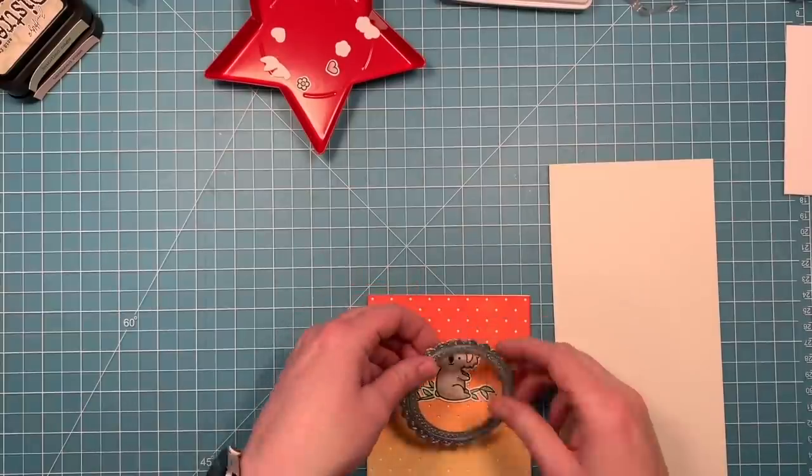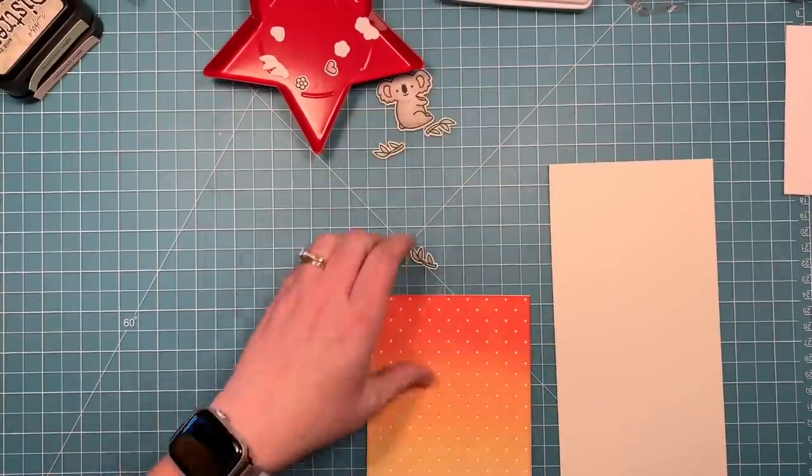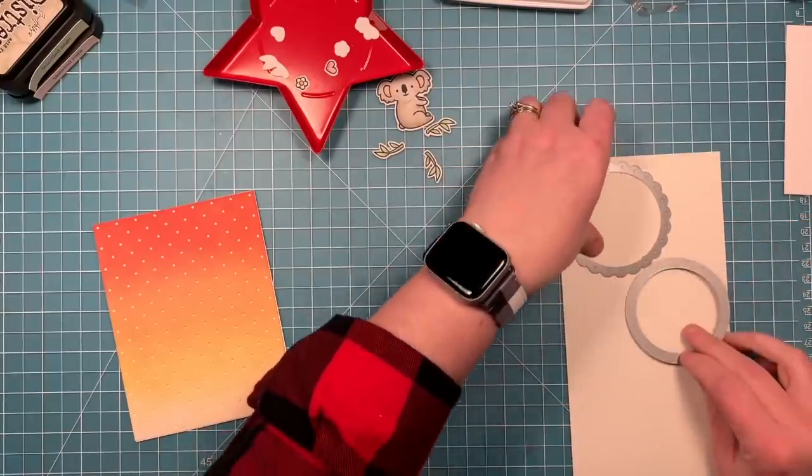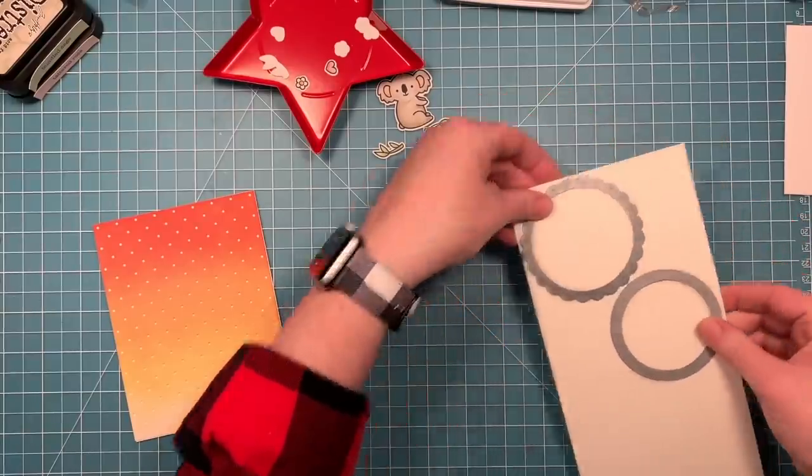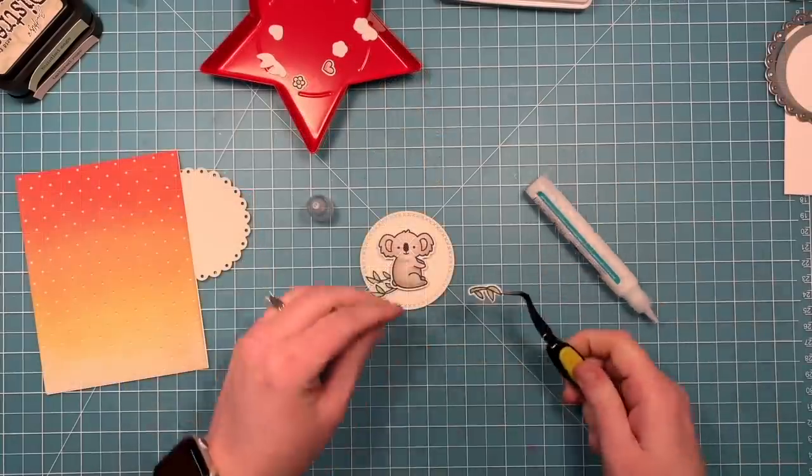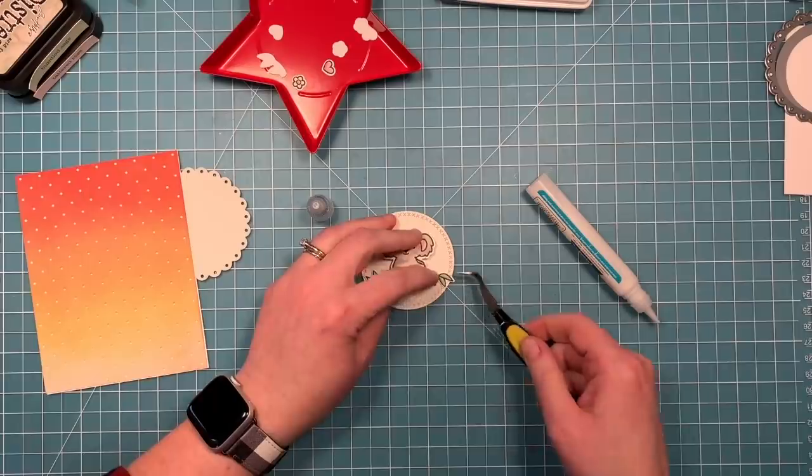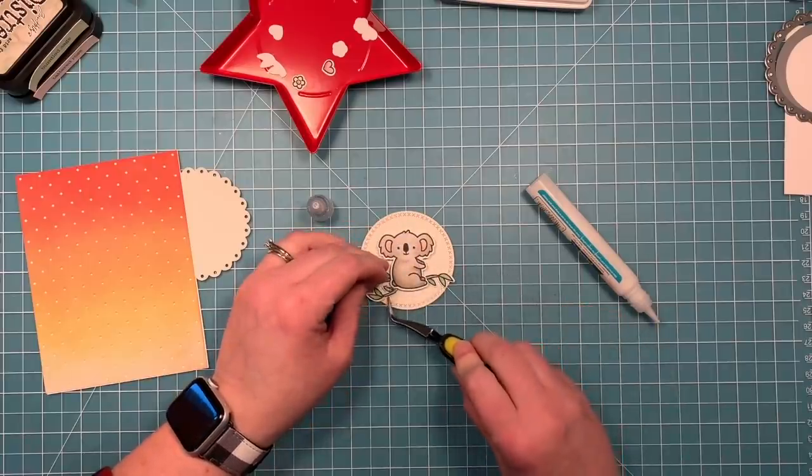Now that I have all my pieces, I can start to assemble my card. I was just figuring out what I wanted to do here. I've got a fancy scallop circle and a cross stitch circle stackable and I'm cutting those out of some cream colored cardstock.